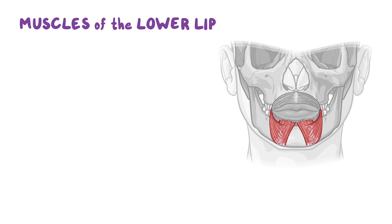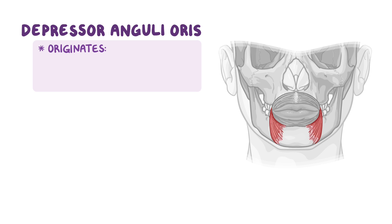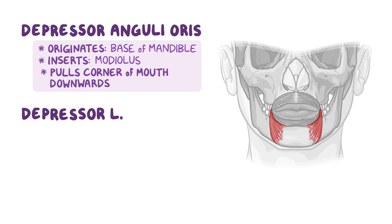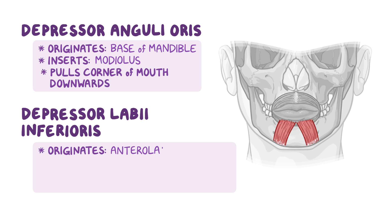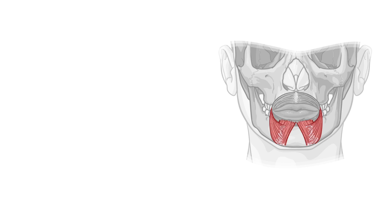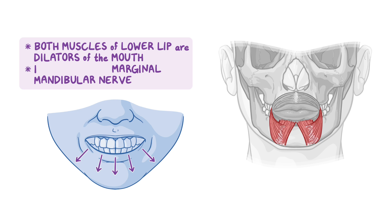The muscles of the lower lip are the depressor anguli oris and the depressor labii inferioris. The depressor anguli oris originates on the base of the mandible and inserts on the modiolus — it pulls the corner of the mouth downwards to express sadness. The depressor labii inferioris originates on the anterolateral body of the mandible and the platysma muscle, inserting into the skin of the lower lip to pull it downward when sad or pouting. Both muscles of the lower lip are also dilators of the mouth, and both are innervated by the marginal mandibular nerve.